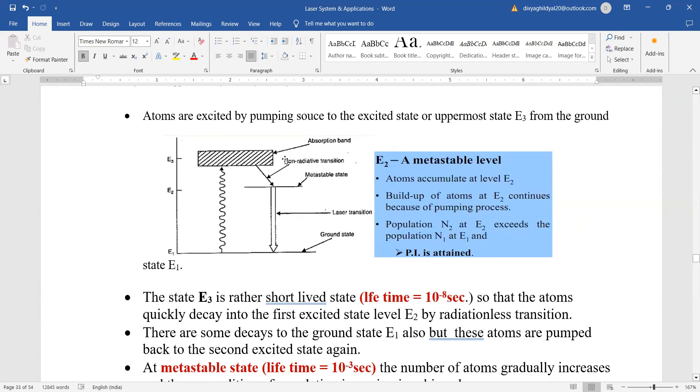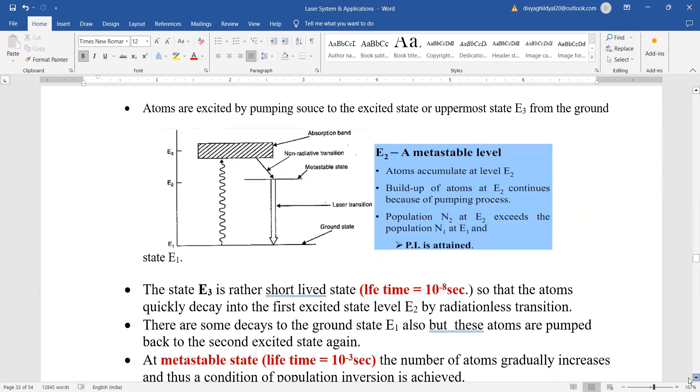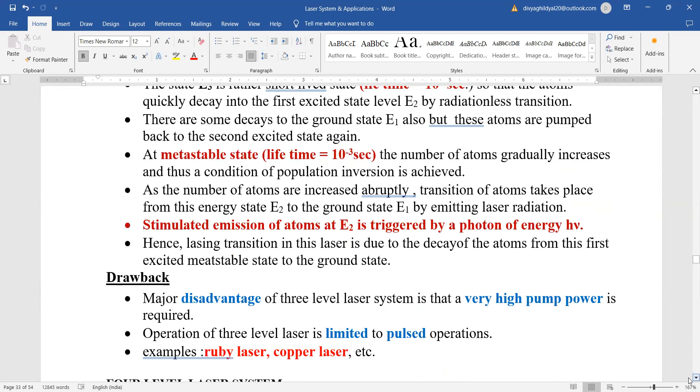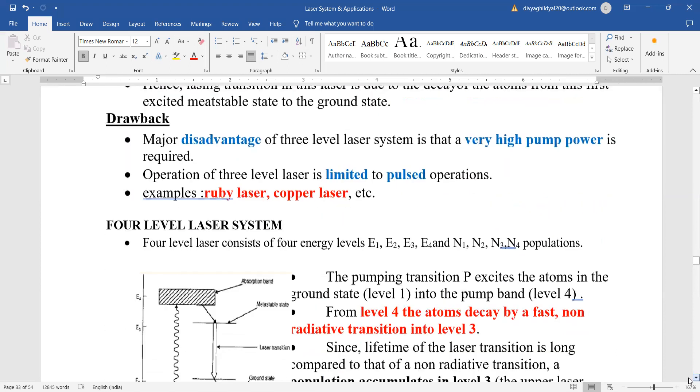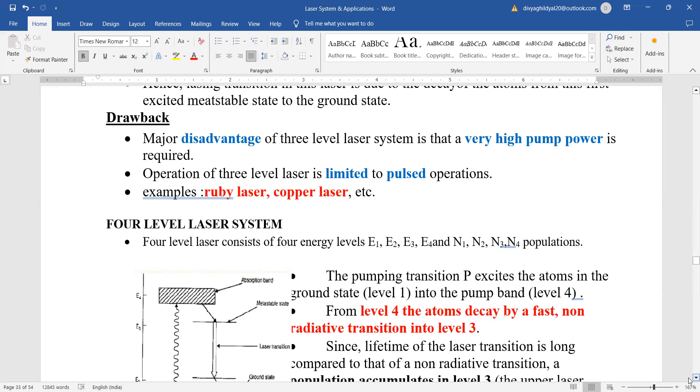And other energy levels, even if the transitions are coming, they will be non-radiative. So metastable state will make the atom stay here for a longer time compared to the usual time of 10 to the power of minus 8 seconds. In metastable state, usually the atom stays for more than 10 to the power of minus 8 seconds. And as the number of atoms are increased, transition of atom takes place and stimulated emission of atoms is triggered and nice laser light is obtained. Only disadvantage with three level laser is that a very high pumping power is required and operation of three level laser is limited to pulsed operation. That means your output will be in the form of pulses. Famous example, as I told you, remember ruby laser and copper laser.